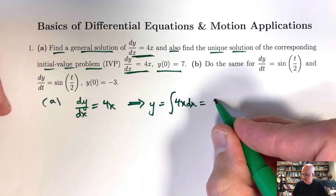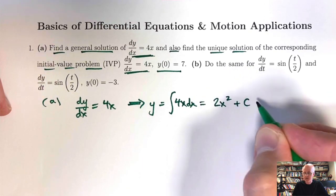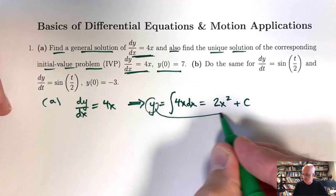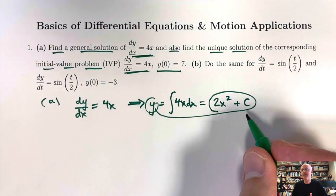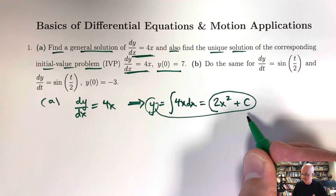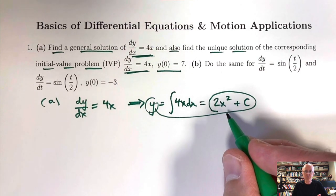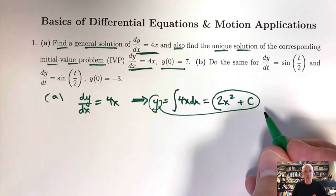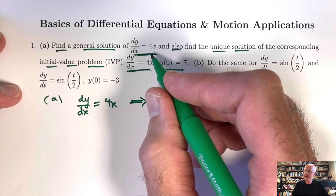This is easy enough of an indefinite integral that you can do it pretty quickly without any fancy techniques. 2x² + c is seen to be a general solution. y = 2x² + c. This represents infinitely many functions, one for each of the infinitely many possible values of c. You can always check that this satisfies the differential equation — its derivative with respect to x is always, no matter what c is, 4x + 0, or just 4x. It satisfies the differential equation.